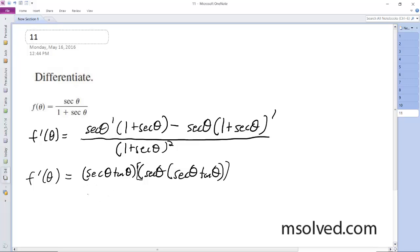And then all over 1 plus secant theta squared. But hold on a second—I'm sorry, there needs to be a minus between these two. So we get secant theta tangent theta times 1 plus secant theta, minus secant squared theta tangent theta.